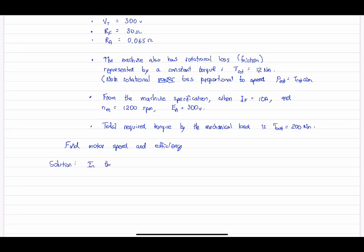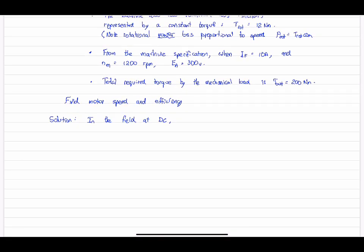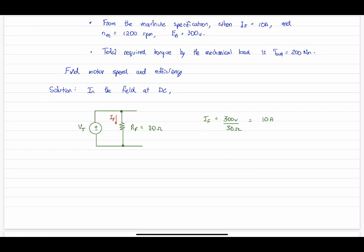All right, so let's have a go at the solution here. Let's start with the field. Again, it's very simple. The field is directly across the voltage source. Remember, we're not showing the inductor here because it is essentially a short circuit at DC. So the calculation is fairly straightforward. It's 10 amps, so it's the same current as identified on the magnetization curve.